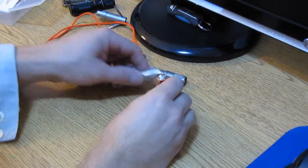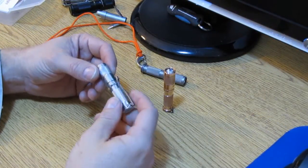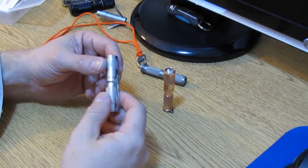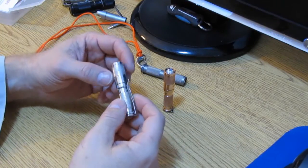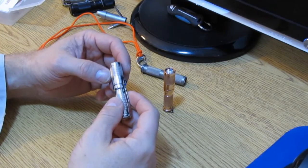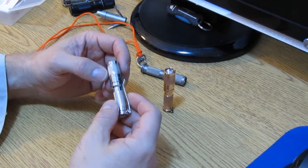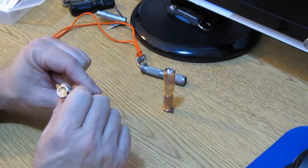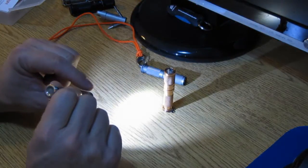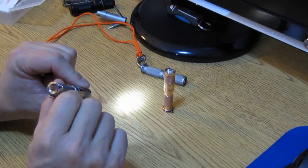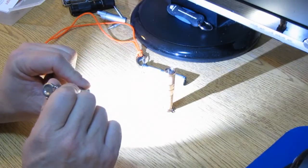Now as you'll recall with the older flashlights, the older AAA versions I should say, the user interface was a three mode sequence of medium, then low, then high. And I'll demonstrate that really quickly here. We start off at medium, turn it off and back on gives you low, off and back on again gives you high.